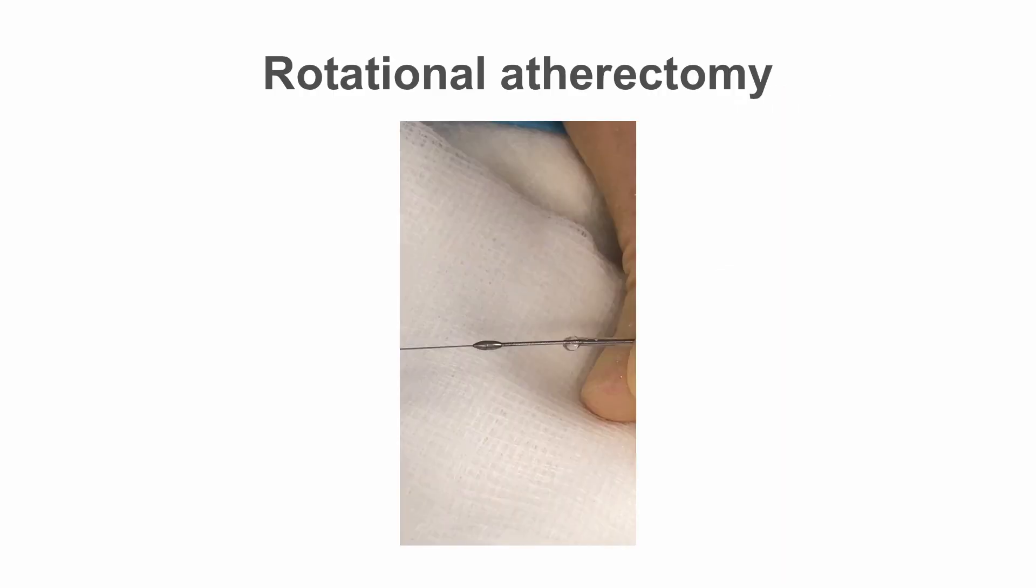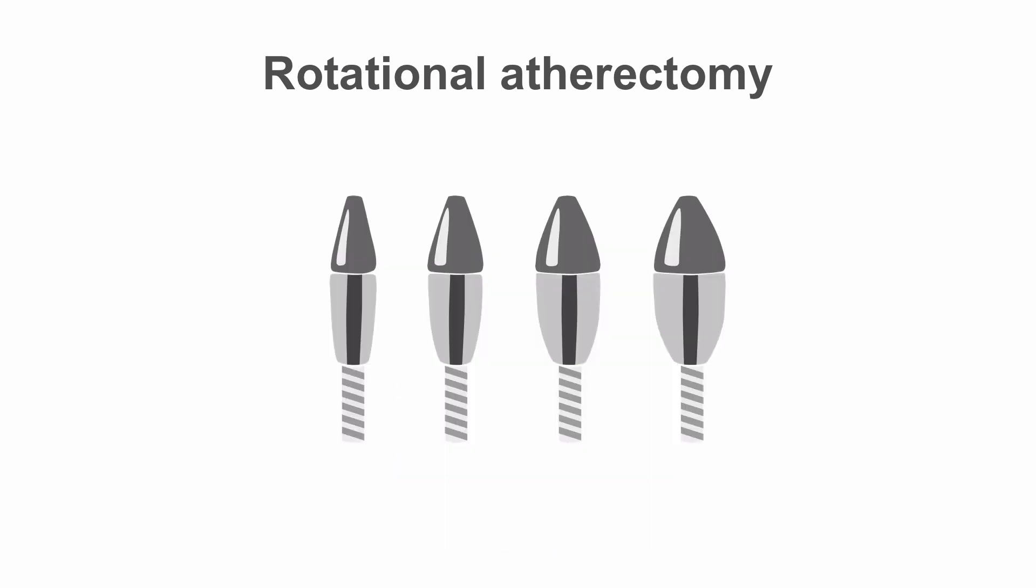In this video, you can see a rotobur used in PCI. Rotational atherectomy, or rotoblation, is a rotating burr that is tipped with industrial diamond and rotates very quickly, around 160,000 revs per minute.